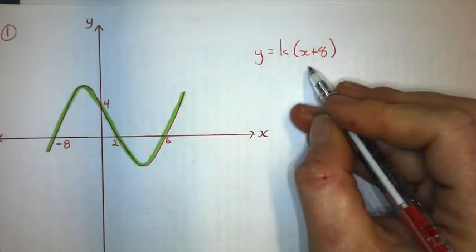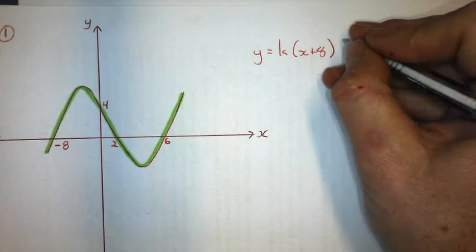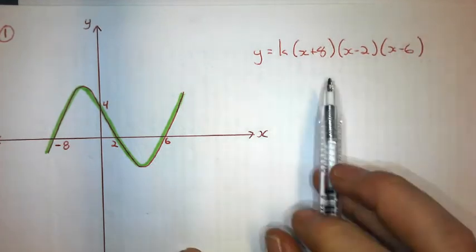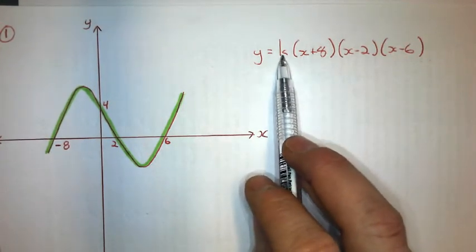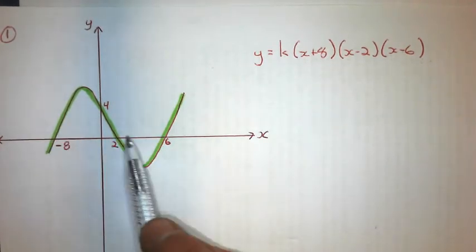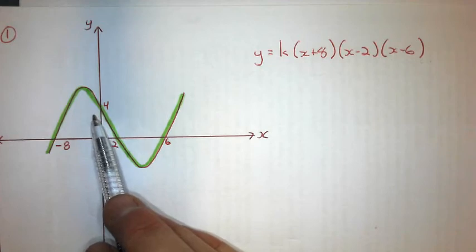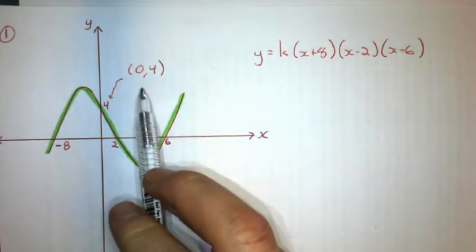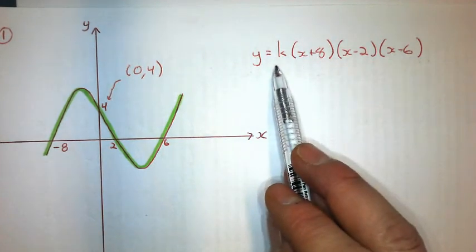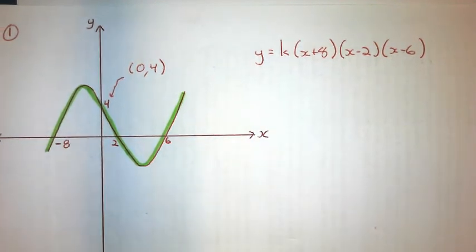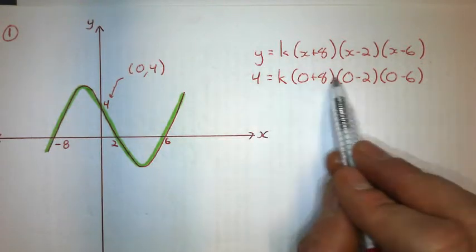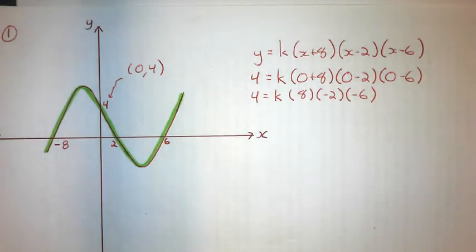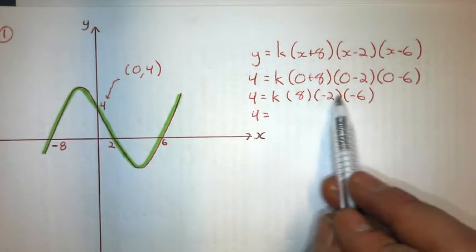So the general form is y = k(x + 8)(x − 2)(x − 6), since x minus negative eight is x plus eight. Now I'm going to solve for that constant k by substituting the y-intercept, which has coordinates (0, 4), in for x and y. Simplifying the number part gives me a coefficient of 96.